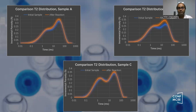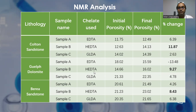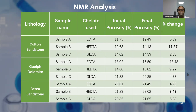Comparing the results in terms of a table: for Colton sandstone, the maximum permeability increase is by HEDTA. In the case of Gulf dolomite, the maximum permeability increase is by HEDTA. And even in various sandstones, the maximum permeability increase is by HEDTA, which shows that HEDTA is very effective in giving positive enhancement of permeability of the rock samples.